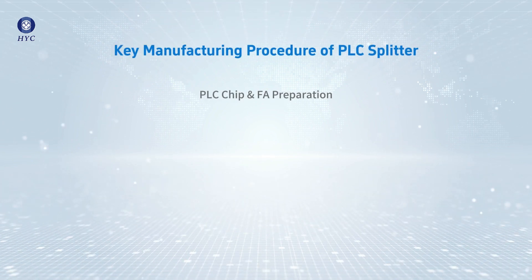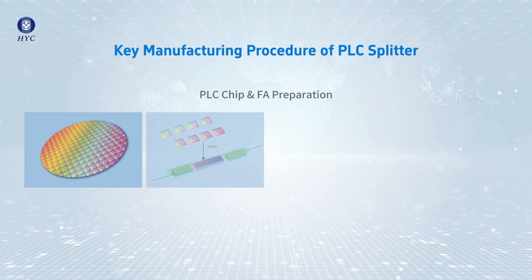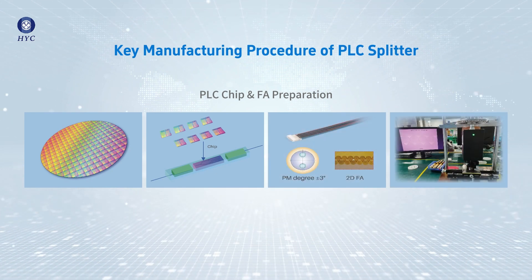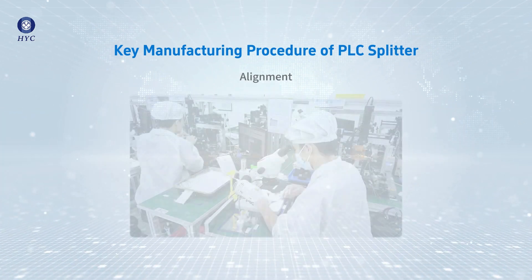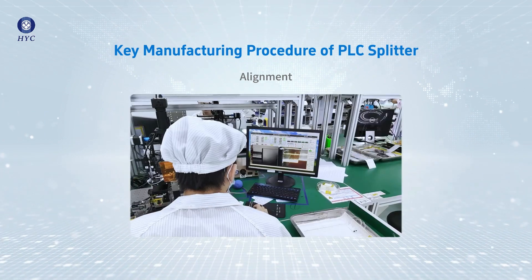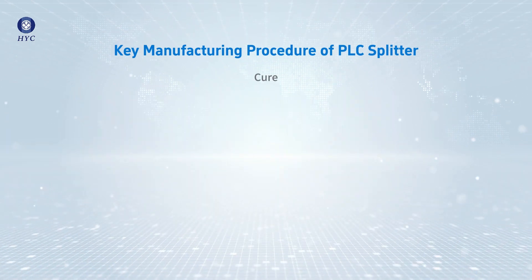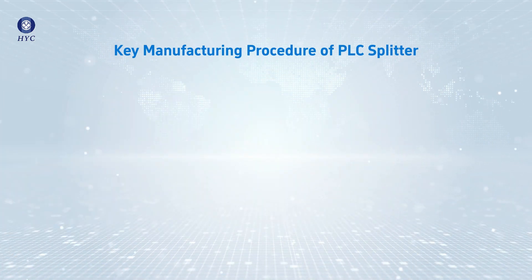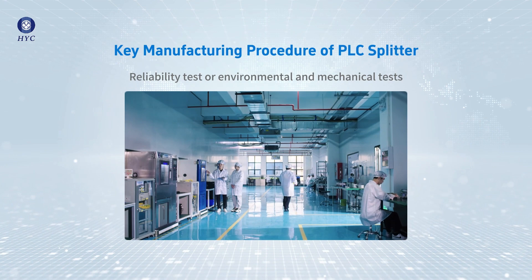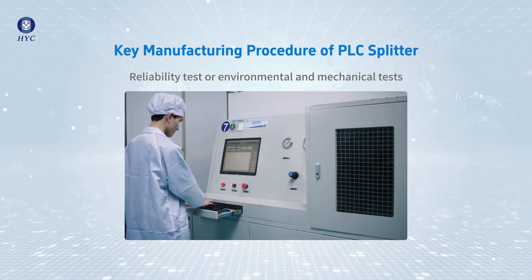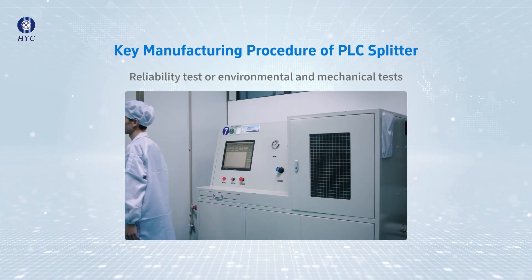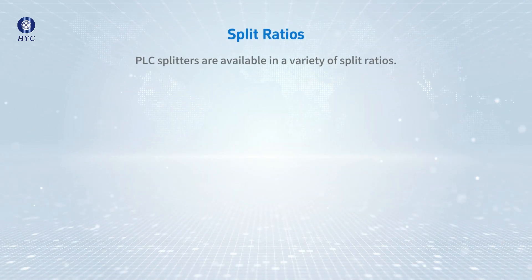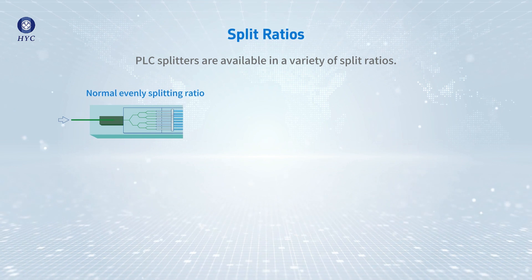Key Manufacturing Procedure of PLC Splitter: 1. PLC Chip and FA Preparation. 2. Alignment. 3. Cure. 4. Reliability Test, or Environmental and Mechanical Test.